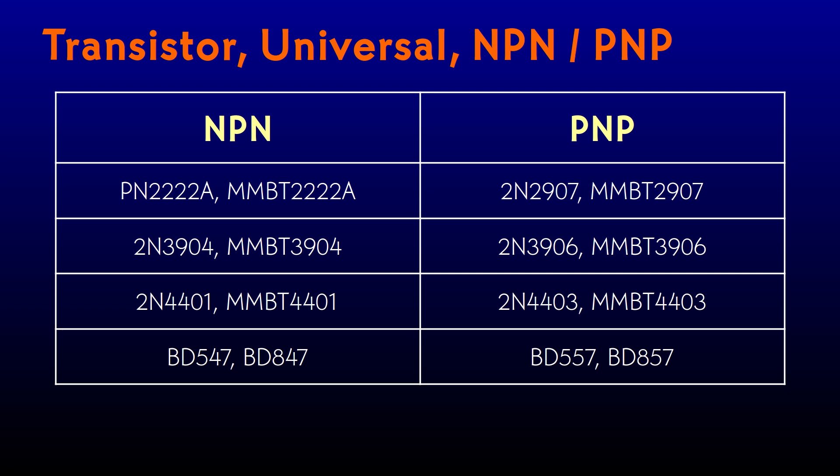I've grouped the part numbers here, with each row of the table giving a complementary pair that will run together gracefully in a circuit like a push-pull follower. Each cell of the table lists the through-hole part and then the surface mount equivalent. Nowadays, I happen to like the 2N4401 and 4403 because they're quieter than the others — a great thing to have for audio. I expect that any of these will work in my circuits unless I told you otherwise. If you're trying to substitute them into a circuit that has the layout already designed, be careful, because not all universal transistors have the same pinout. Make sure you've identified the leads correctly.